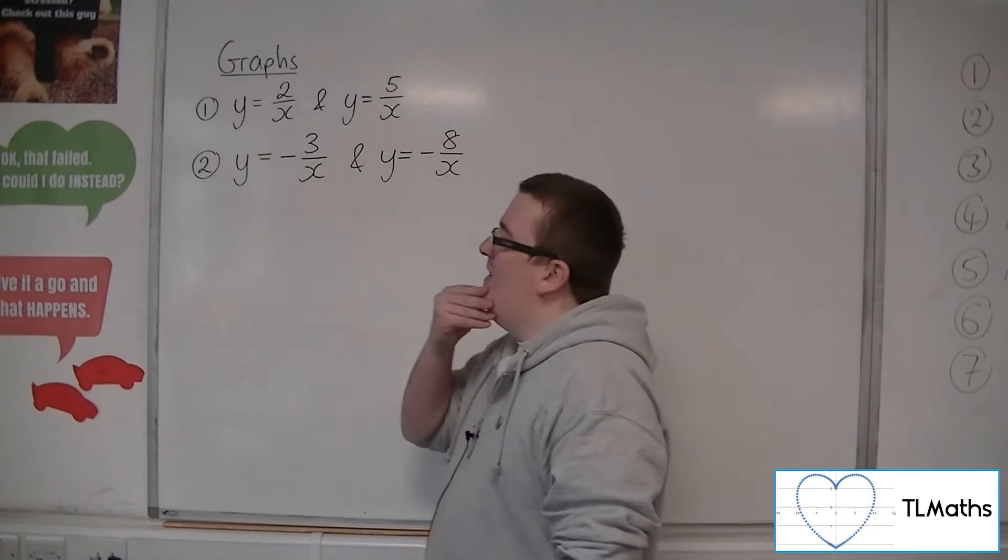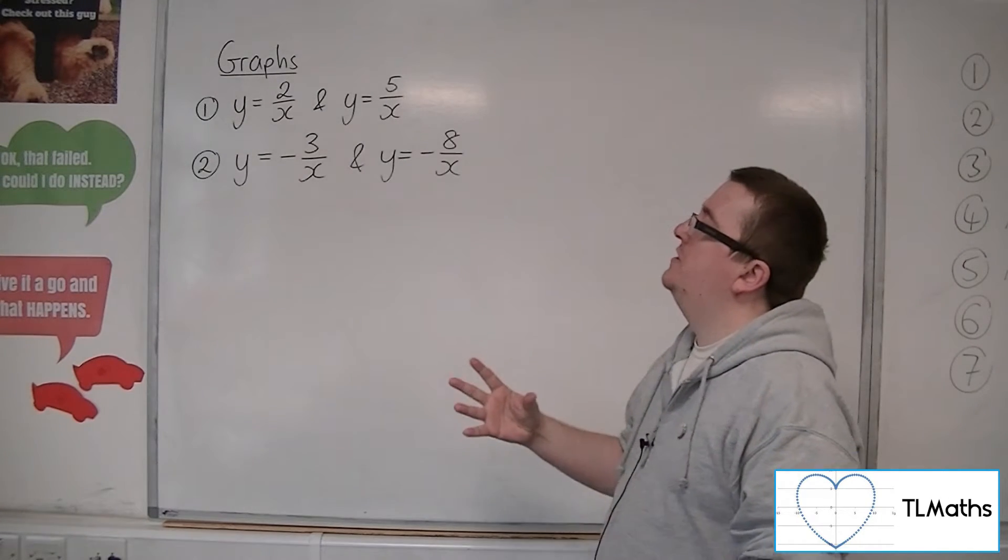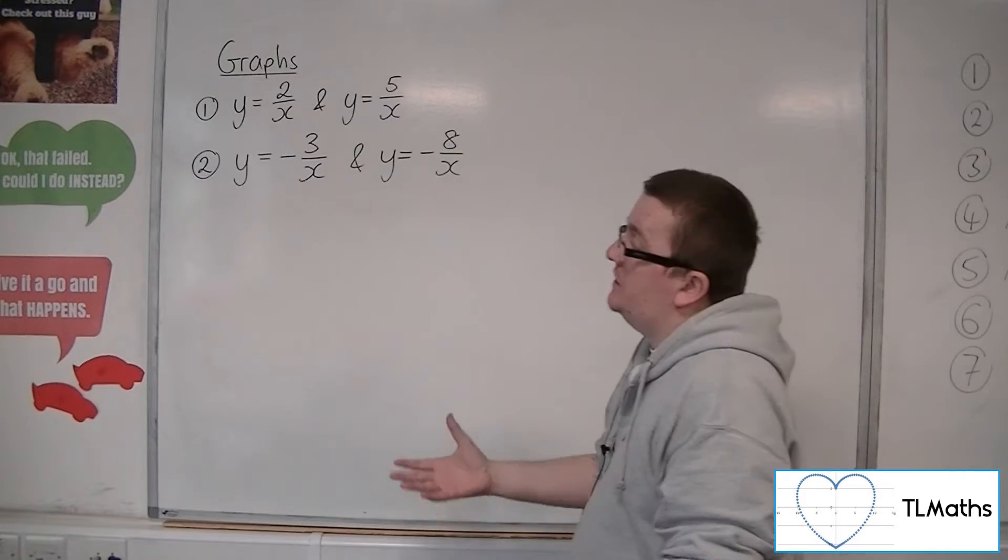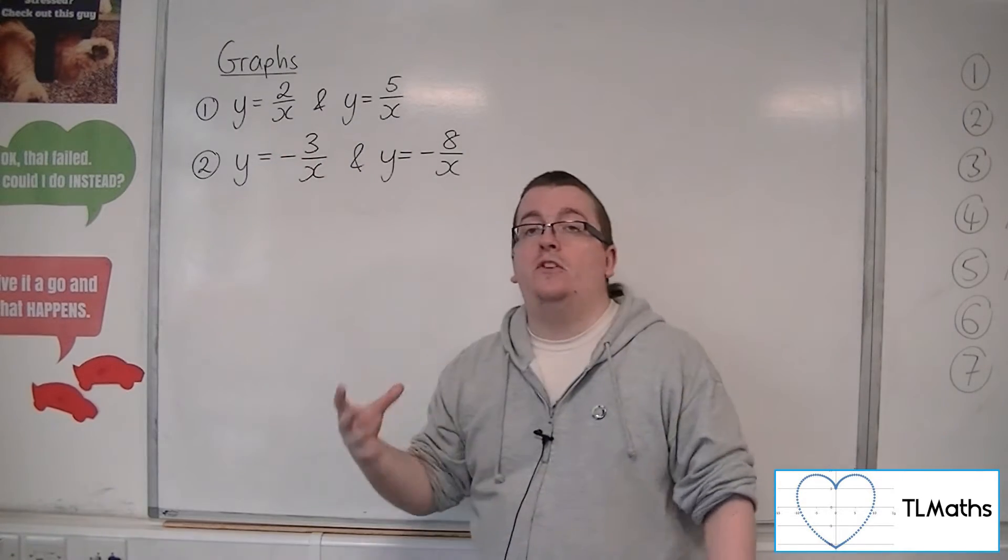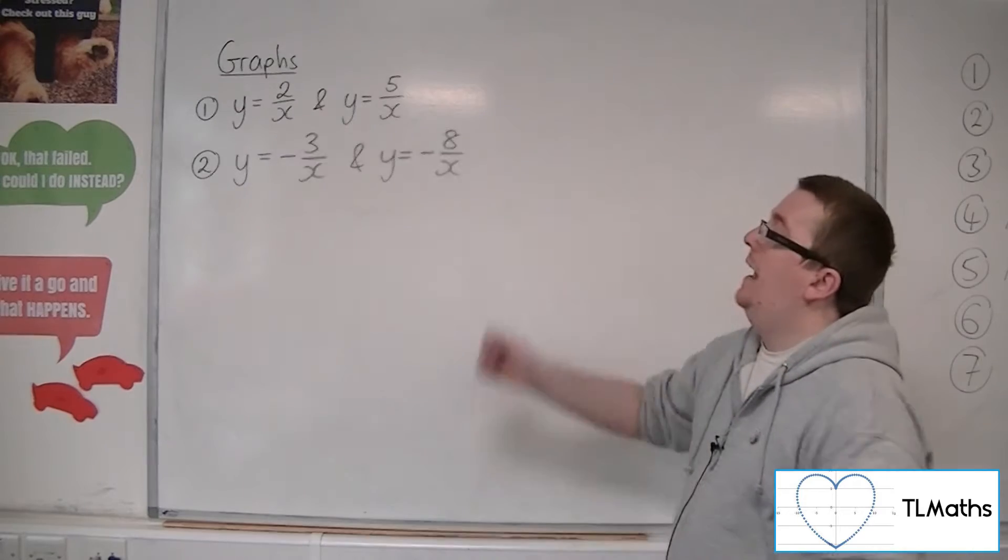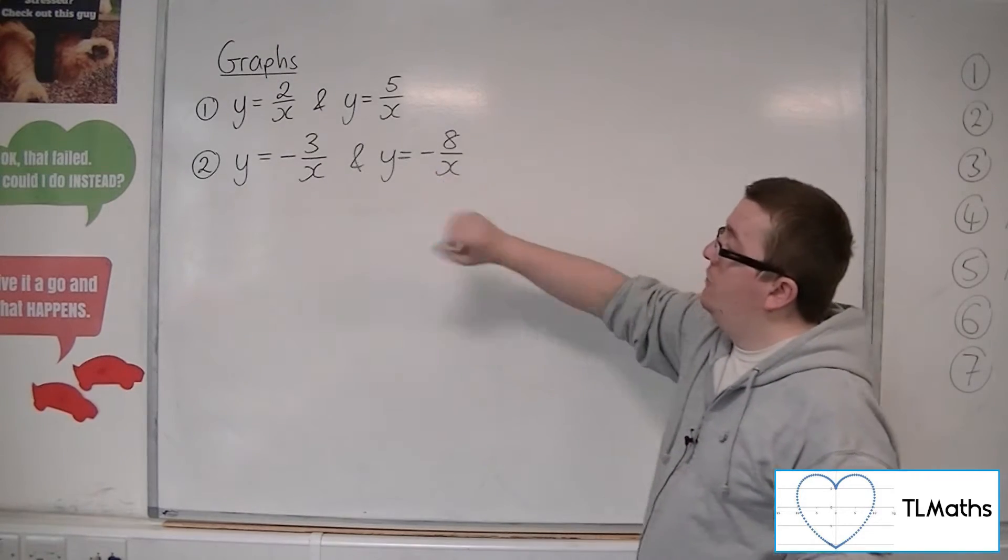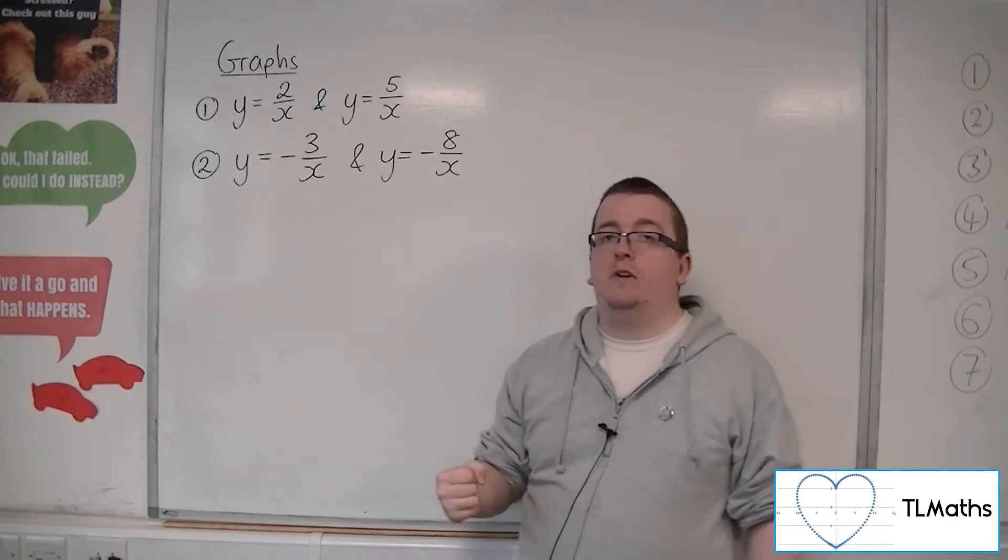Okay, so what we're going to do in this video is look at two examples of where I need to sketch y equals 2 over x and y equals 5 over x on the same graph, and y equals minus 3 over x and y equals minus 8 over x on the same graph.